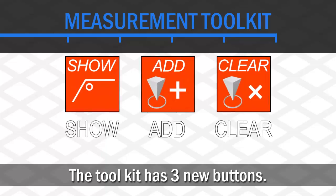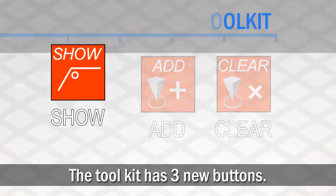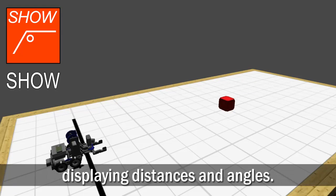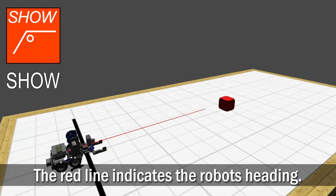The toolkit is controlled by three new buttons in the interface. The Show button activates the measurement toolkit, displaying the distance and angles from the robot to key objects within range, relative to the robot's heading, indicated by a red line.